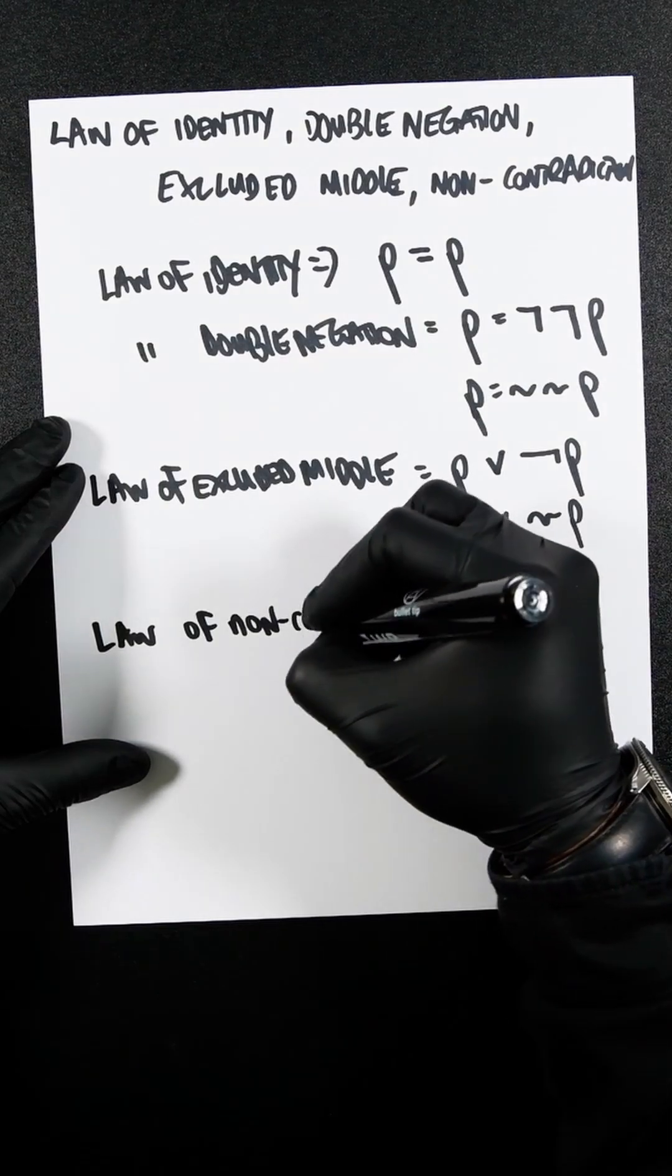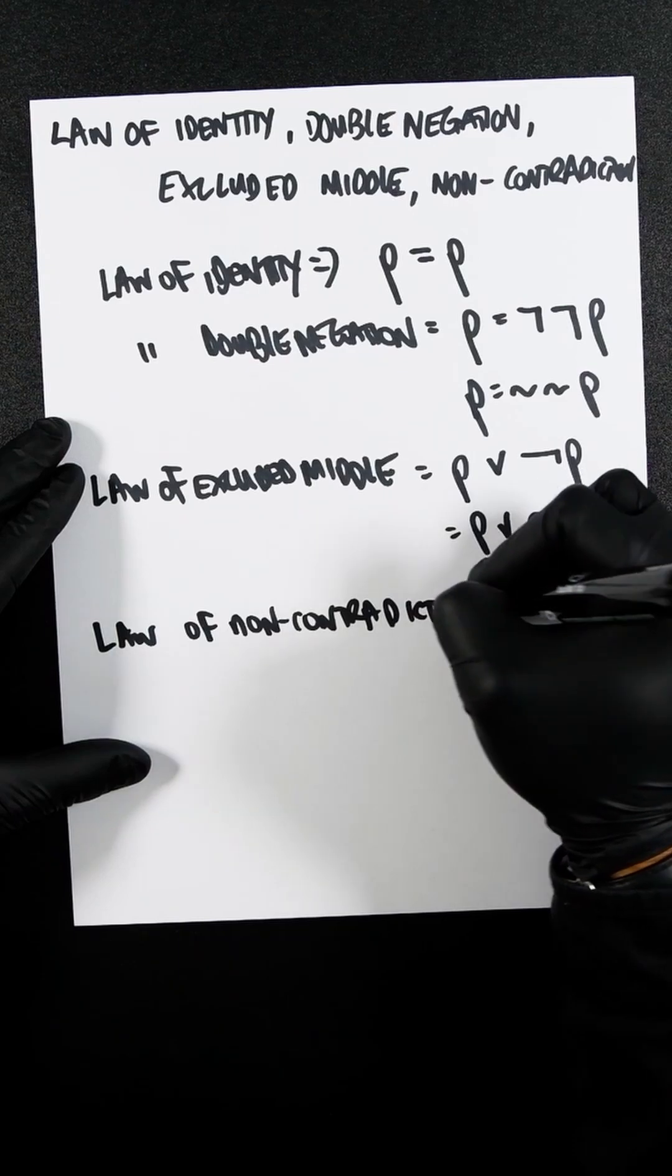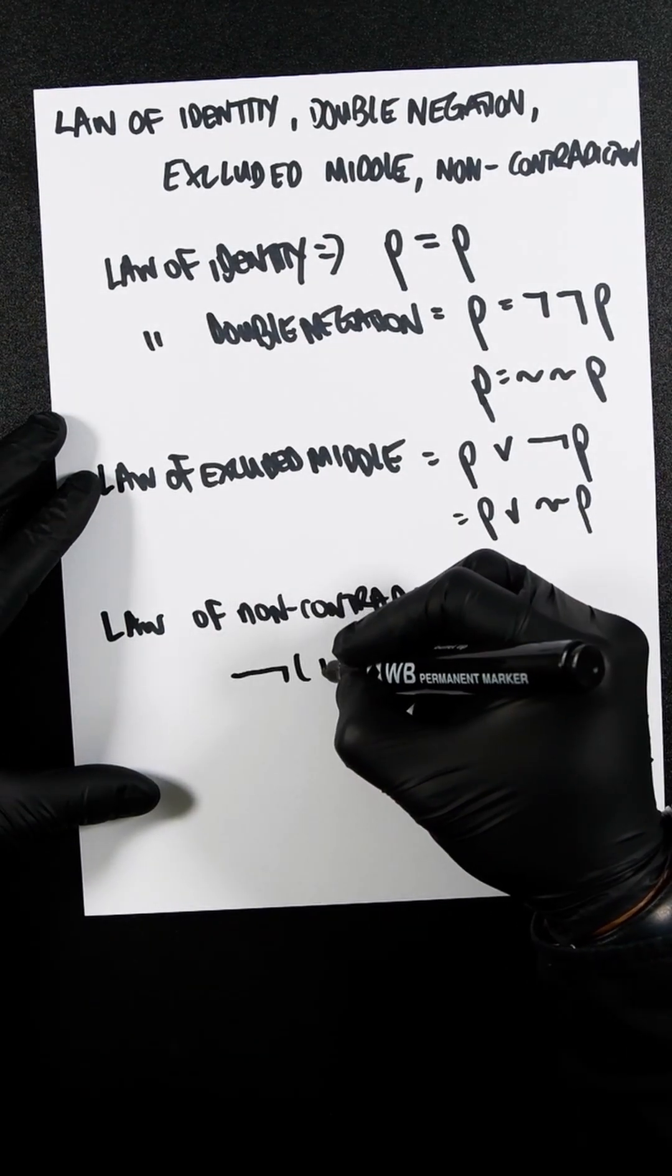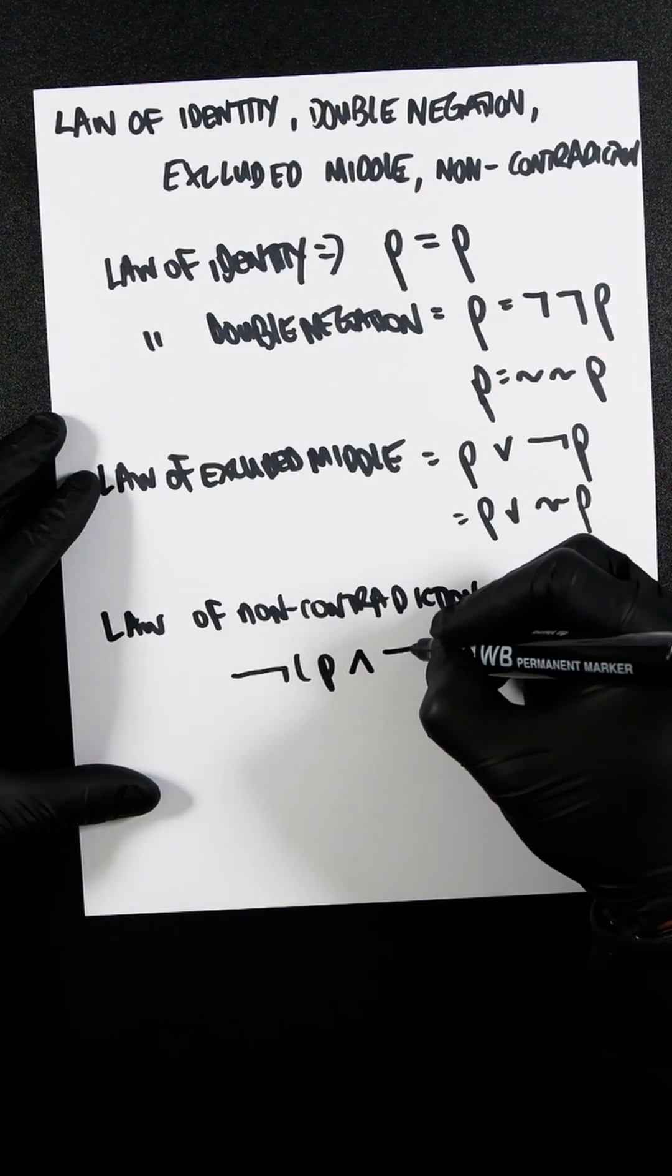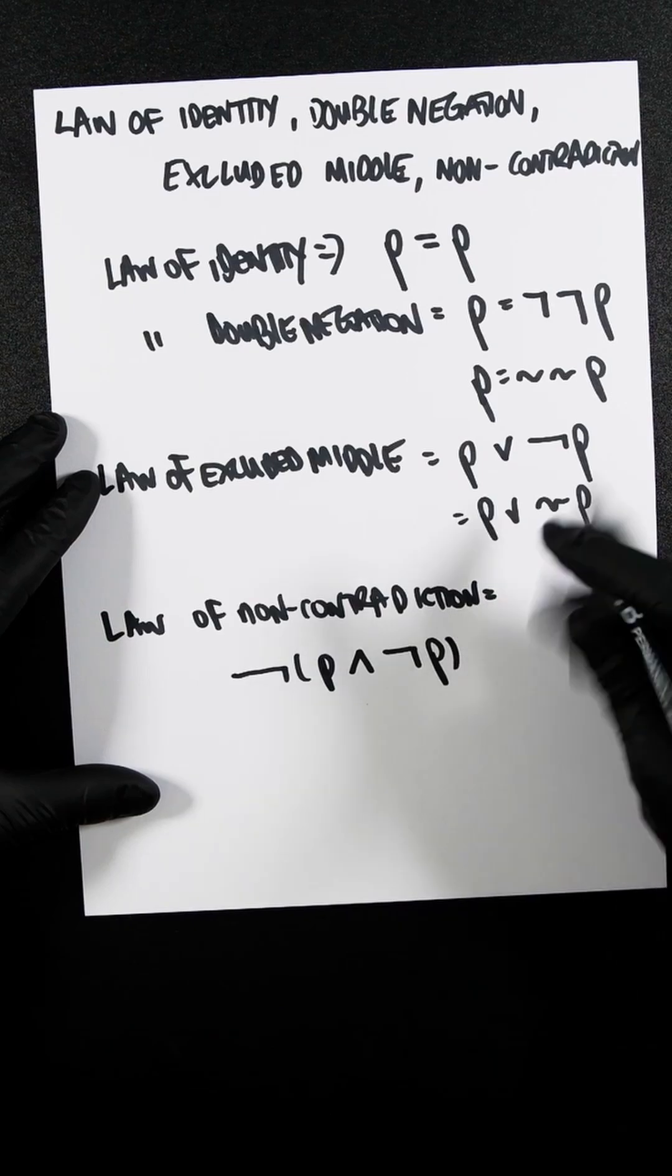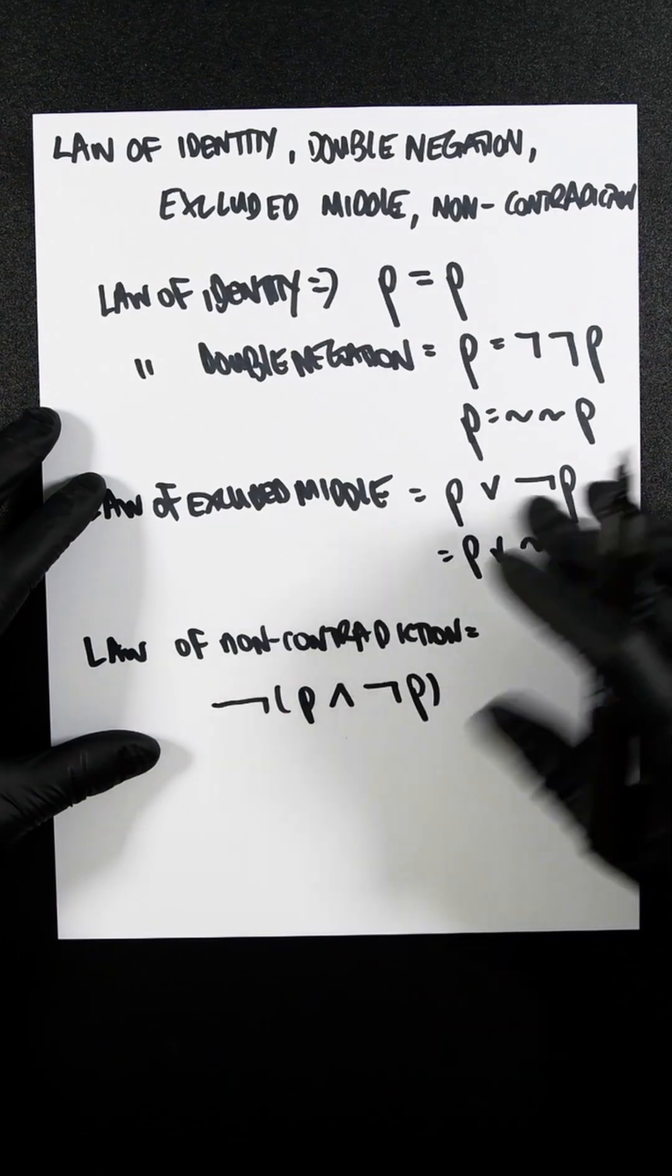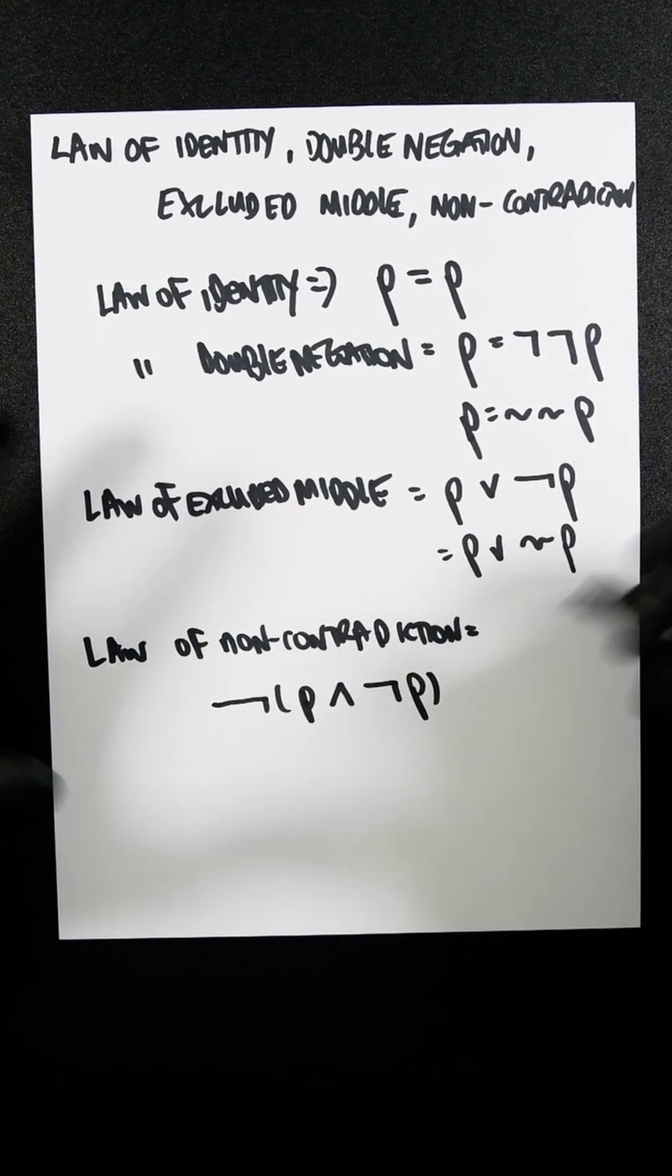The law of non-contradiction. So that's going to be not brackets P and not P. So a proposition cannot be both true and false at the same time and in the same sense.